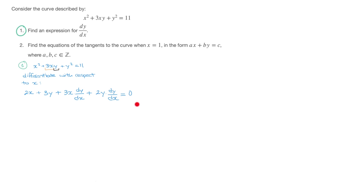Now at this stage we've differentiated everything with respect to x, but we need to find an expression for dy/dx. Looking at what we have, we can see there are two terms with dy/dx: we have 3x dy/dx and 2y dy/dx.